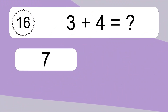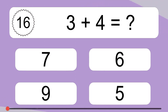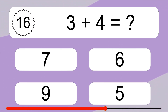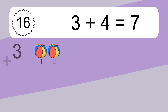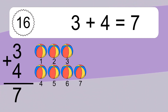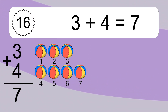3 plus 4 equals what? 3 plus 4 equals 7. Let's count it. 1, 2, 3, 4, 5, 6, 7.